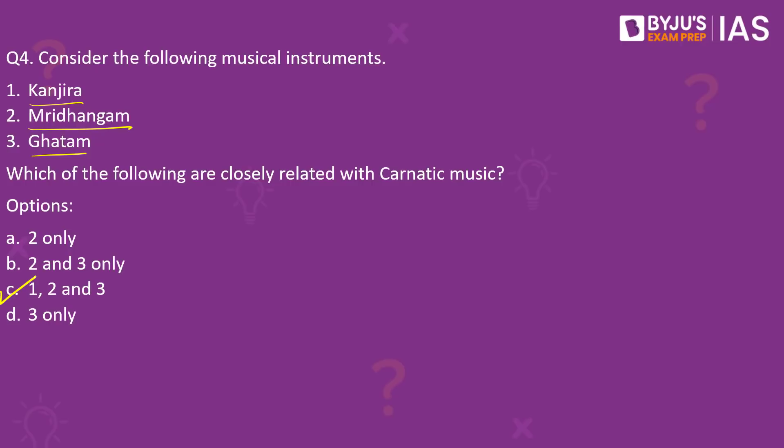The Kanjira is basically a type of drum — a percussion instrument, similar to the Mridangam, which is considered to be one of the oldest percussion instruments in the Indian subcontinent. The Ghatam is a simple clay pot with a narrow mouth. Similar instruments are also found in states like Punjab and Western India, but there they are referred to by different names.